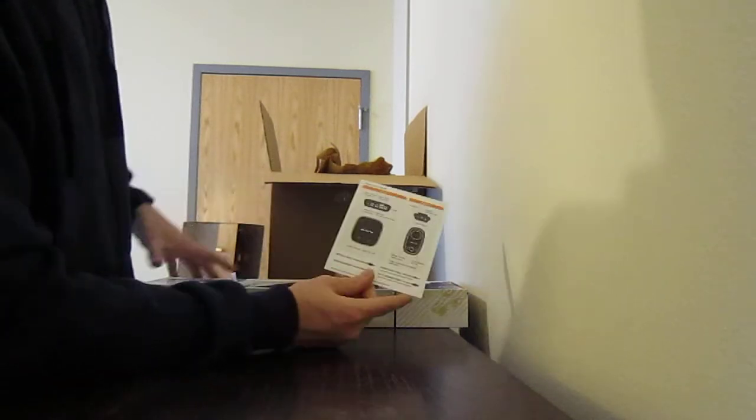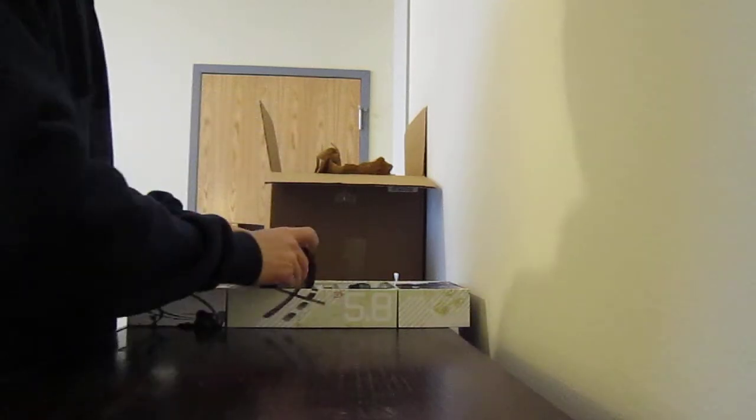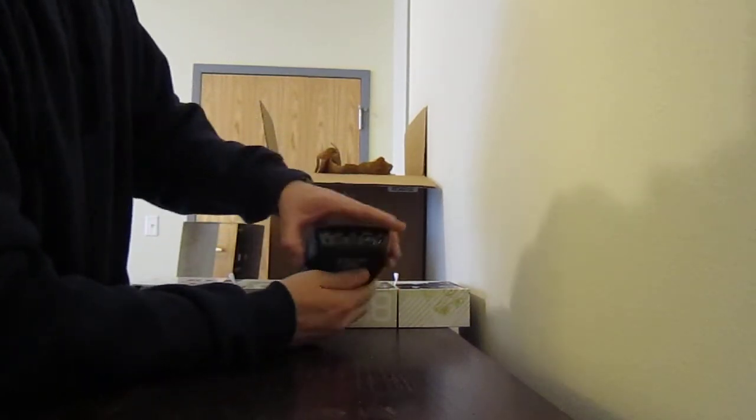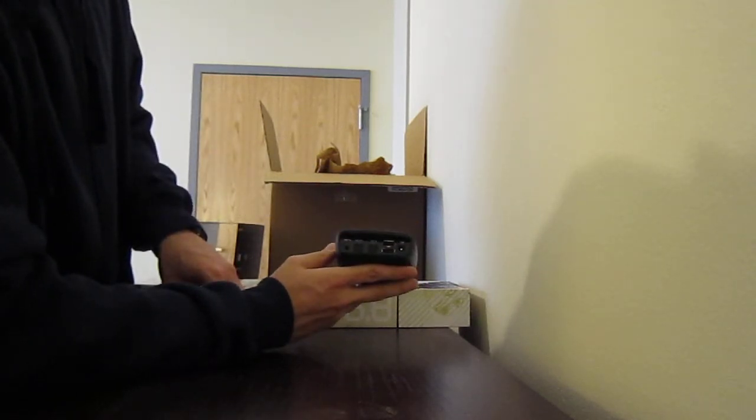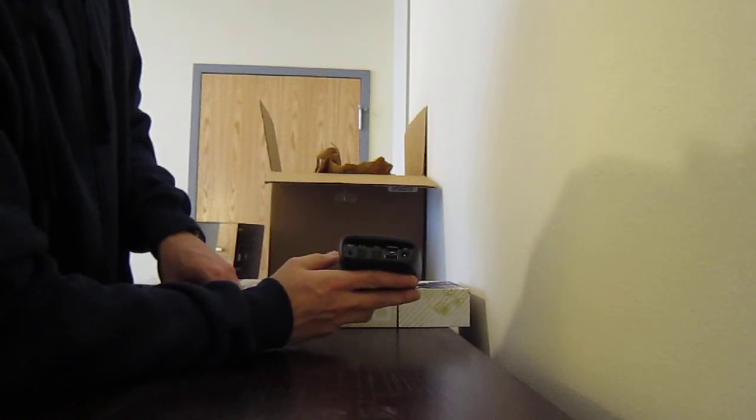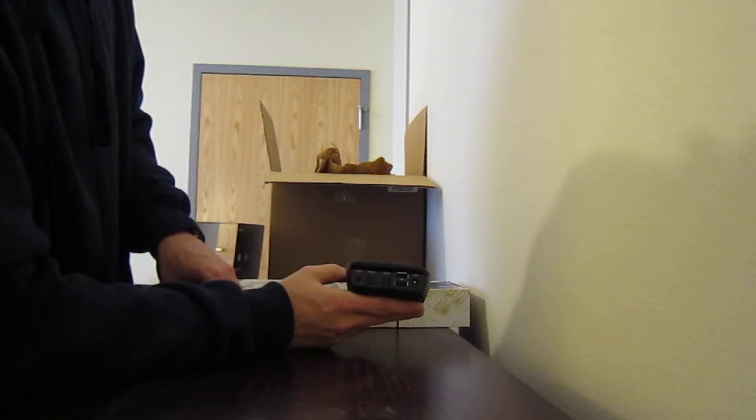Got a little instruction card and the actual receiver base that has an optical in and out, USB, a power outlet, and then an auxiliary in for like an MP3 player or something.